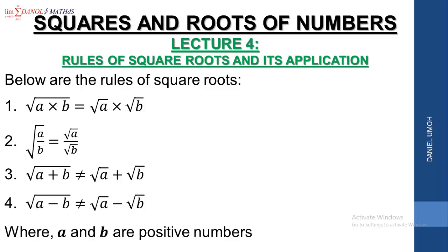Note that a and b are positive numbers, because in our last lectures we told you that we are dealing with only positive numbers here. Negative numbers are in advanced mathematical concepts known as complex variables. So here we are considering only positive numbers, and these rules are only applicable when a and b are positive numbers.